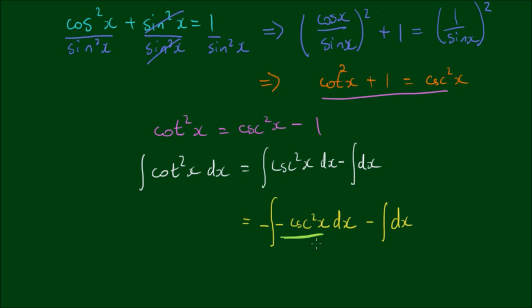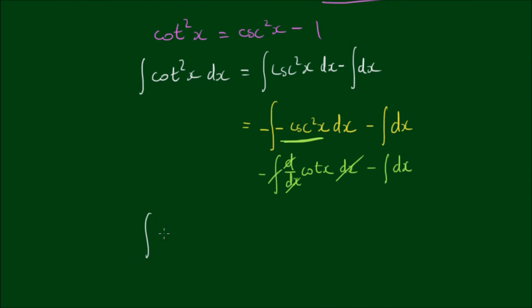So now this negative cosecant squared of x is equal to the derivative of the cotangent of x. So if we integrate the derivative of the cotangent of x, the integral and the d cancels out and the dx cancels out.